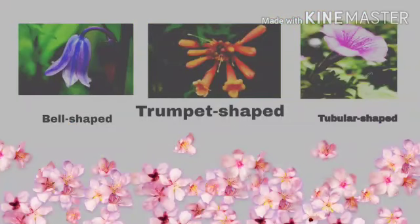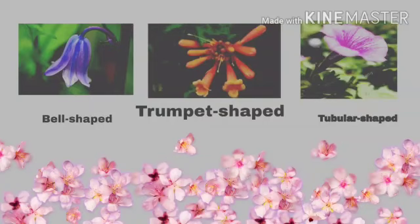Now let us talk about the different shapes of flowers. The flowers are of different shapes. The petals of the flower give the flower its shape. First one: bell-shaped. In this, the flower just looks like a bell — like our school bell. The shape of the flower is just like a bell.